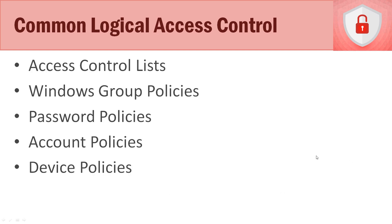Common logical access control methodologies include access control lists — determining who has access to what and what type of access they do or don't have. Windows group policies implement these across domains, managing how people authenticate and access technological assets. We can set up password policies, account policies surrounding user accounts, and device policies controlling what types of devices get access, when, and how.